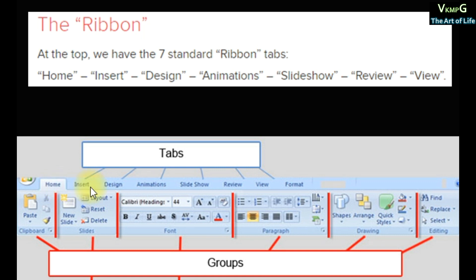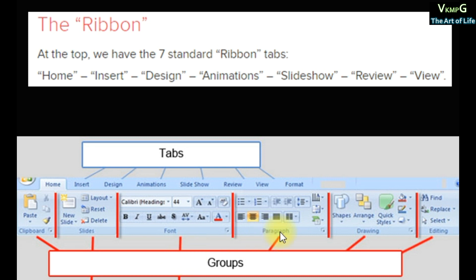The ribbon tabs include: Home tab, Insert tab, Design tab, Animation tab, Slideshow tab, Review tab, View tab, and Format tab. In the Home tab, the groups are Clipboard, Slide group, Font group, Paragraph group, Drawing group, and Editing group.